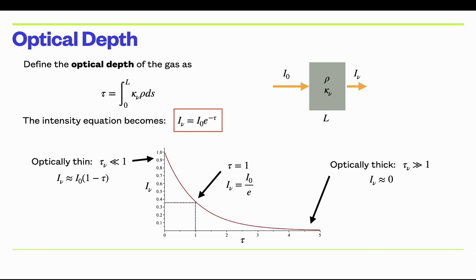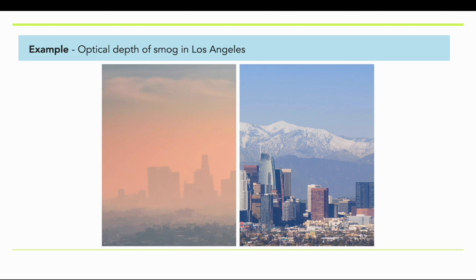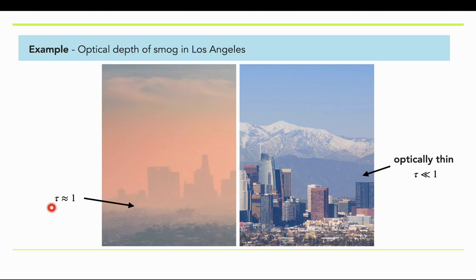Here's an example using smog in Los Angeles. The right image shows the buildings in downtown LA and the San Bernardino mountains in the background with a pretty clear view — not much attenuation, so we say this is optically thin with τ << 1. When heavy smog builds up and you can still make out features but they're attenuated, the optical depth is around one. In the worst case, when smog completely obscures the view, that is optically thick — the San Bernardino mountains are there but you can't see them.